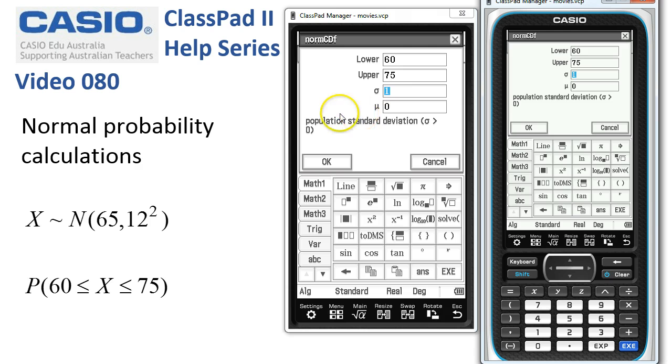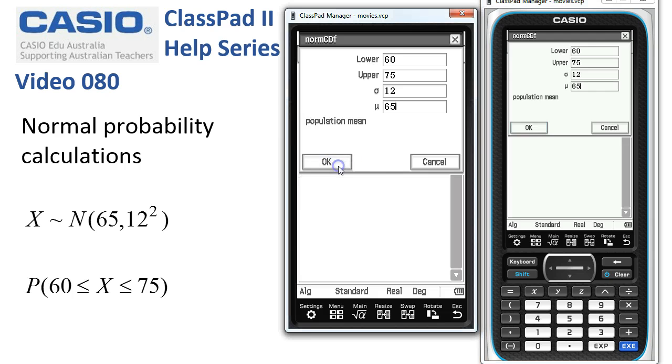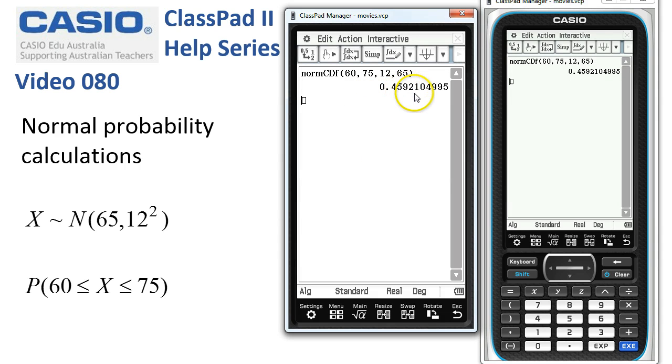You notice that the information changes at the bottom as we go through the boxes: lower boundary, upper boundary, population standard deviation, mean. Now the standard deviation is 12 and tap execute, enter the mean is 65. Now remember two executes, tap tap, here would be the same as tapping on OK here and the probability is evaluated.